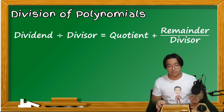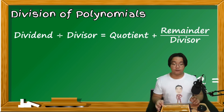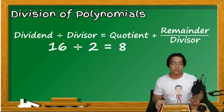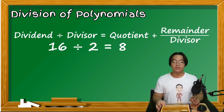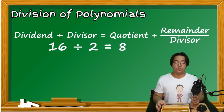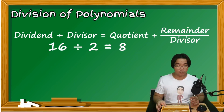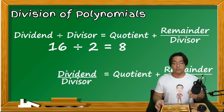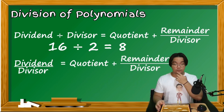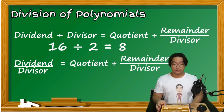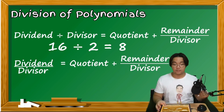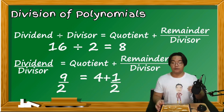For example, 16 divided by 2 gives us 8. Another way to write a division process is using the fraction symbol: the dividend over the divisor equals the quotient plus the remainder over the divisor. A good example is converting an improper fraction into a mixed number — 9 over 2 equals 4 and a half, or 4 plus 1 half.